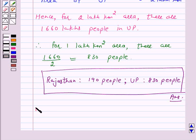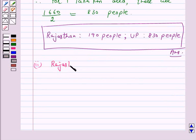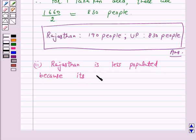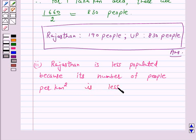Let's move to Part 2. In Part 2 we have to tell which state is less populated. There are 2 states: Rajasthan and UP. For Rajasthan there are 190 people per km² and for UP there are 830 people per km². So Rajasthan is less populated because its number of people per km² is less. Hence the answer for this part is Rajasthan.